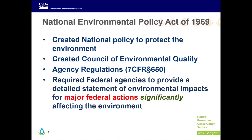NEPA is a procedural law. We begin the process, go through the process, and come out of the process with a decision. Its intent is to inform the public of the agency's intended federal action and to ensure that informed decisions are made. The law resulted in four major outcomes: it created a national policy to protect the environment; it created the Council of Environmental Quality, or CEQ, appointed by the president to oversee federal agencies' compliance with the act; it required each federal agency to develop regulations to implement the act — NRCS's regulations are published in the Code of Federal Regulations at 7 CFR, Section 650; and it required federal agencies to provide a detailed statement of environmental impacts for major federal actions significantly affecting the environment.